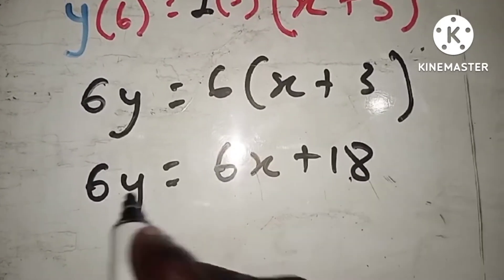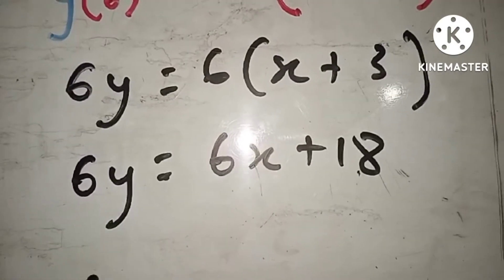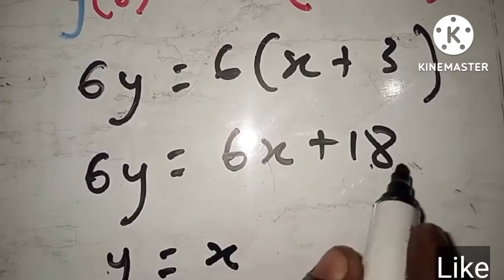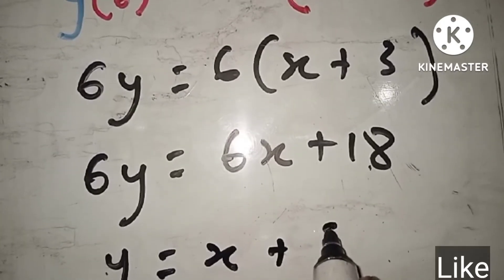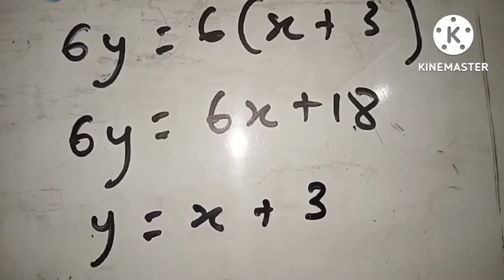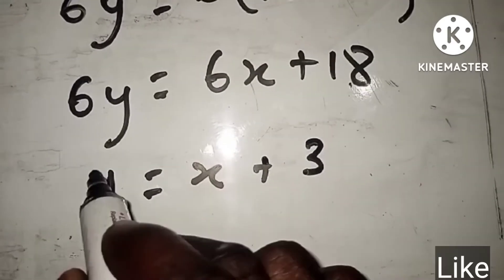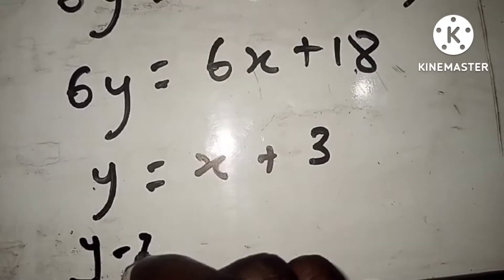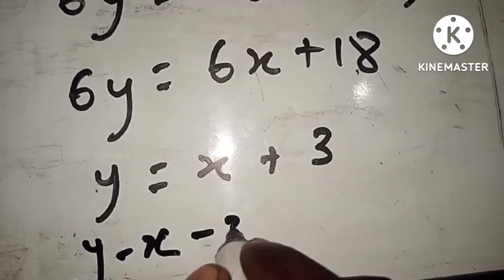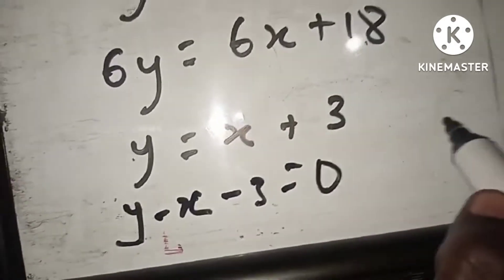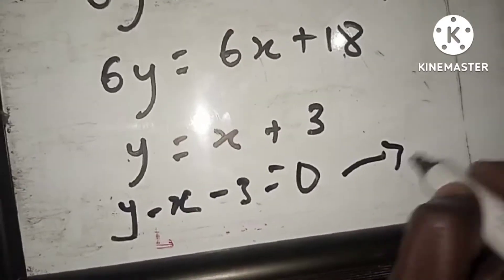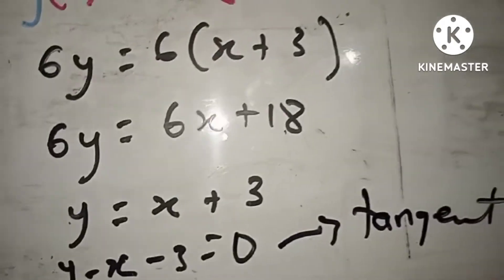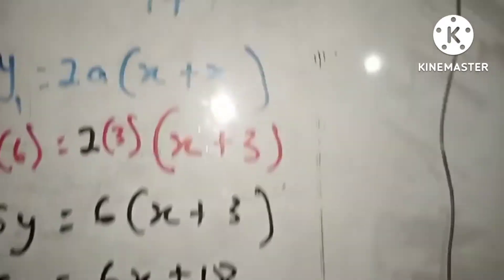We can reduce this equation by dividing both sides by 6, giving y equals x plus 3. Sending everything to the right-hand side of the equation gives y minus x minus 3 equals zero. This is the equation of the tangent.